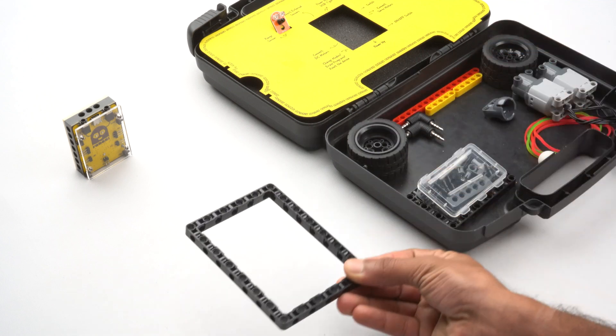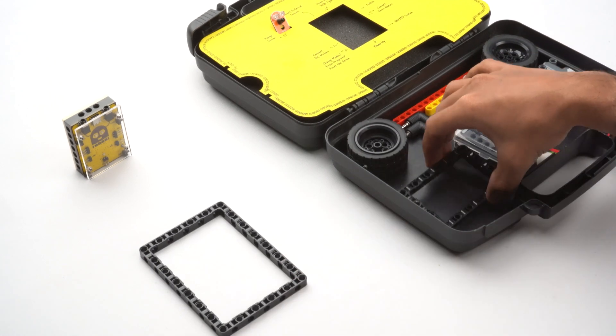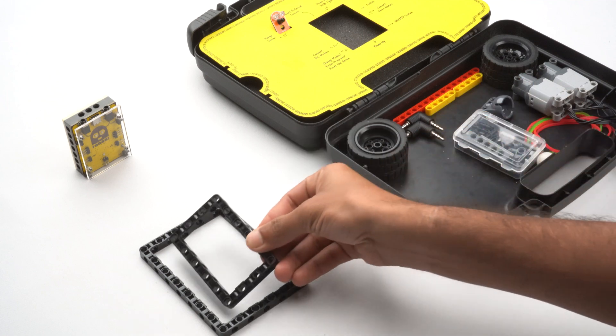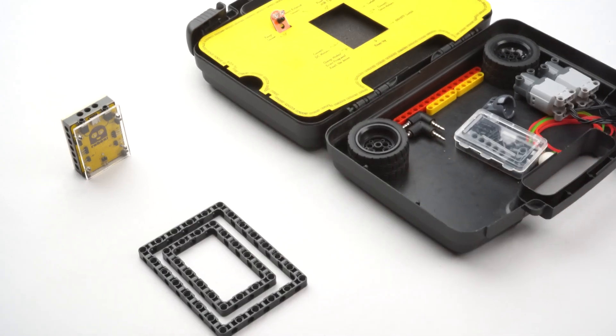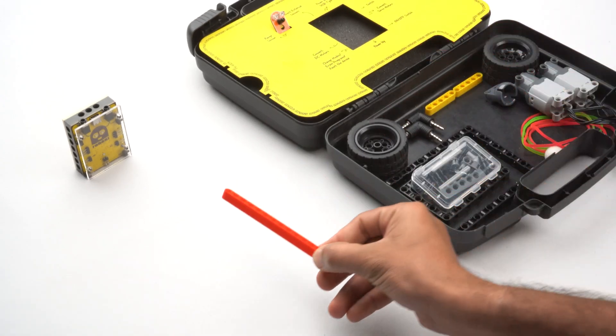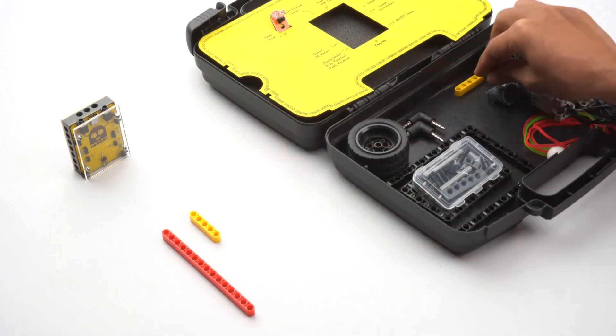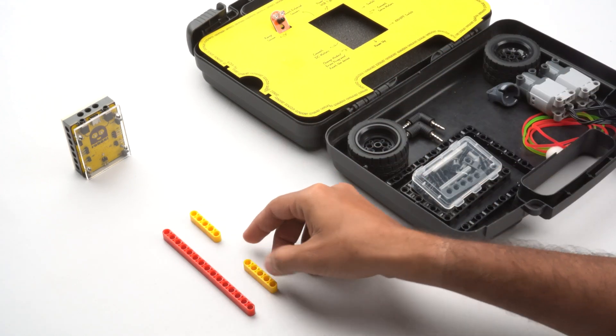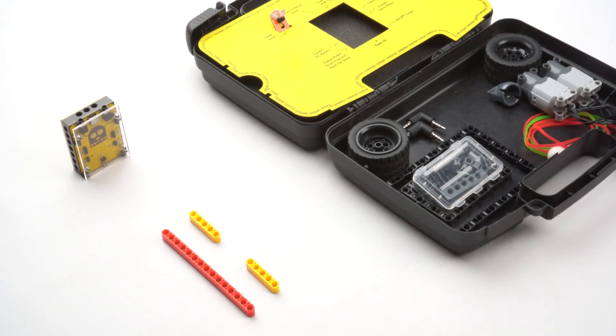Next up, we have two different sizes of blocks for your models. You can create sturdy frames and bases for your projects. We also have two different sizes of beams. One larger beam and two smaller beams. These beams are great for constructing this model structure.